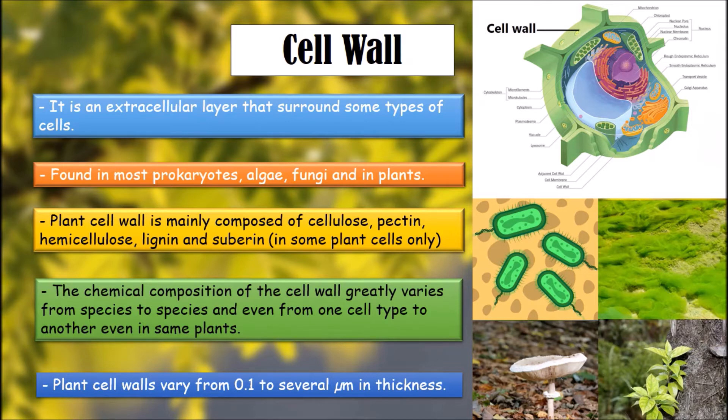In this section, we are going to discuss about plant cell walls. The walls of plant cells must have sufficient tensile strength to withstand internal osmotic pressures. Plant cell walls vary from 0.1 to several micrometers in thickness.